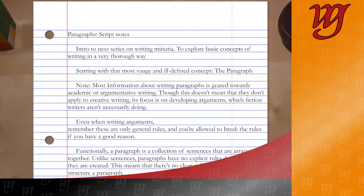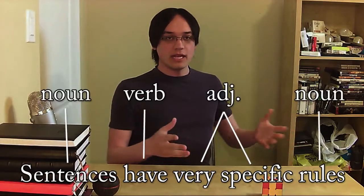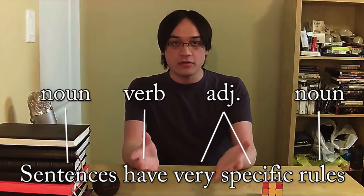All right, back on track. Functionally, a paragraph is defined as a collection of sentences arranged together in a single block of text, such as the one you see here. Nice little paragraph — there are words and they're arranged together. Unlike a sentence, which has very explicit rules on the way that it has to be arranged — rules that you probably learned if you've ever learned a second language — paragraphs have no explicit rules that determine how they are created or how they flow.